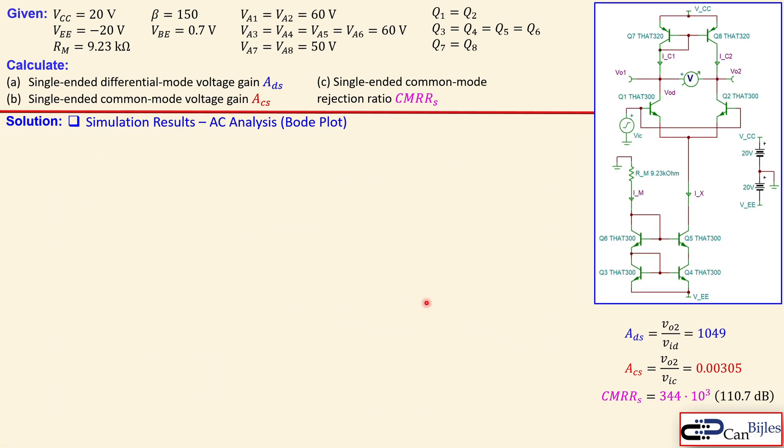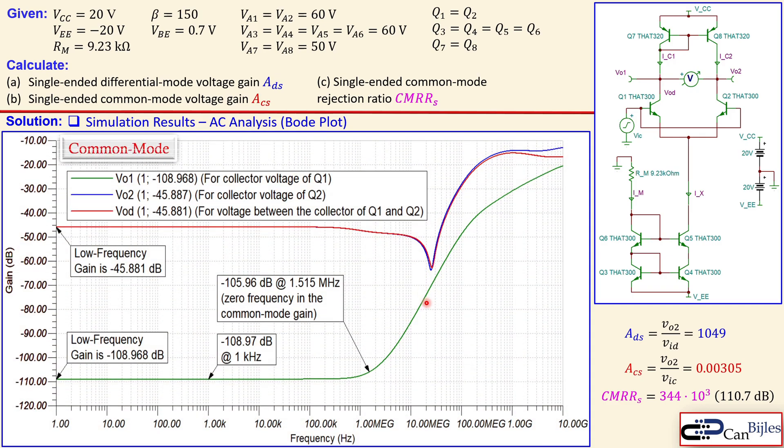Now looking at the common mode voltage gain Bode plot. This is also for three voltages. For VO1, VO2, and the difference between those two. The red one is again the VOD. And the blue one is only VO2. You see these are also almost exact same. And the green one is only looking at the VO1. And the VO1 is the lowest one. And the VO2 and the VOD are almost exact same. You see here the values also. They are very close. It's measured at one hertz. So almost DC.